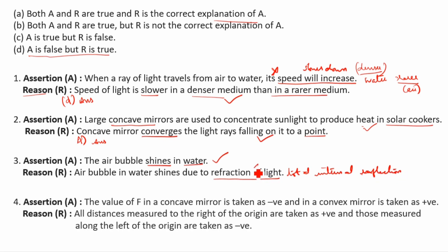It's total internal reflection. So this is wrong. A is correct, R is wrong, so C is the answer. A is true but R is false. C is the answer.